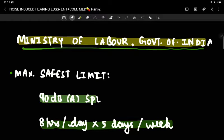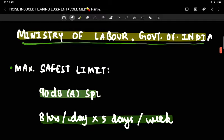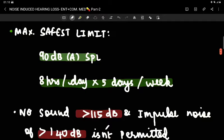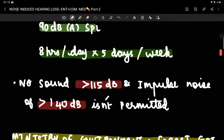Now let's move on to what the government of India speaks about noise-induced hearing loss. According to the Ministry of Labour, the maximum safest auditory limit is 90 decibels for eight hours per day, five days per week. They also say that no sound of more than 115 decibels and no impulse noise of more than 140 decibels is permitted.